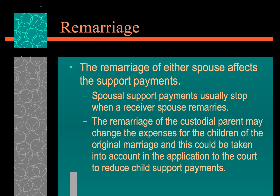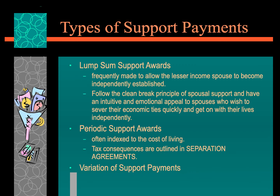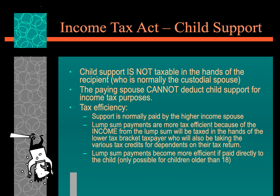Spousal support usually stops when one of the spouses remarries, either together or to someone else. Remarriage of the custodial parent may change the expenses of the children of the original marriage and can be taken into account in an application to the court to reduce child payments. The types of child payments include a lump sum, periodic support, or a variation of the two. Child support is not taxable in the hands of the recipient, but the paying spouse cannot deduct child support.